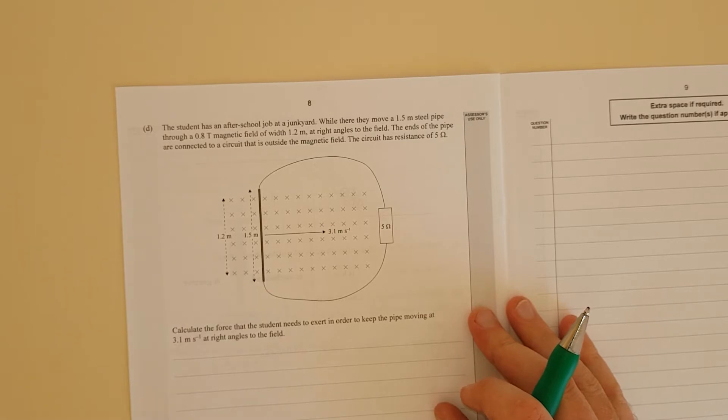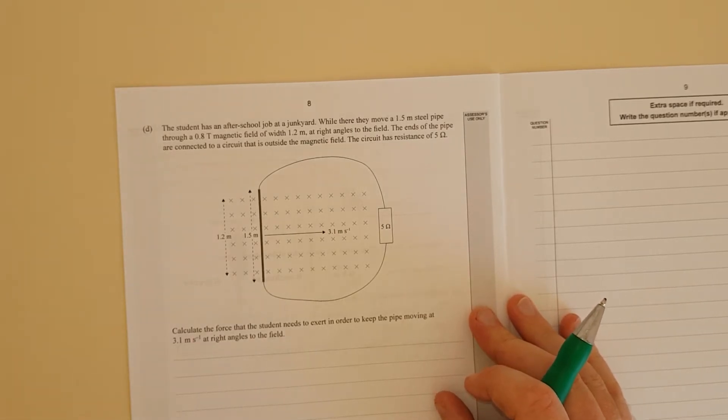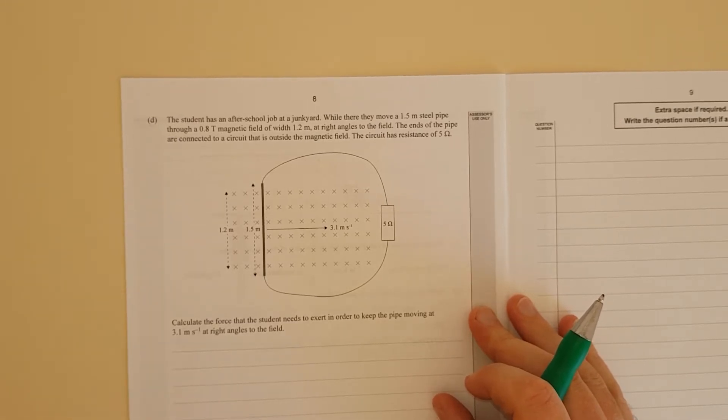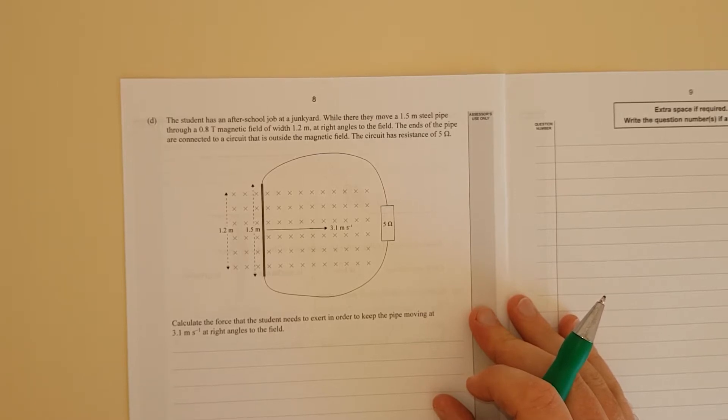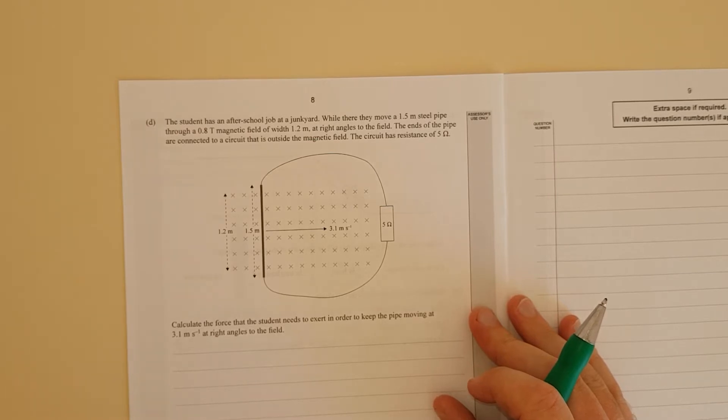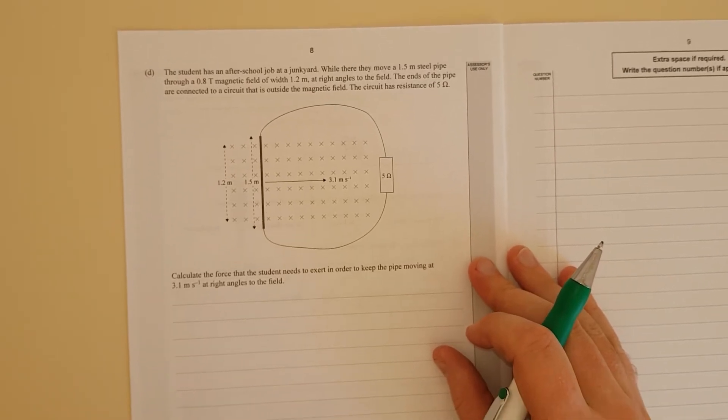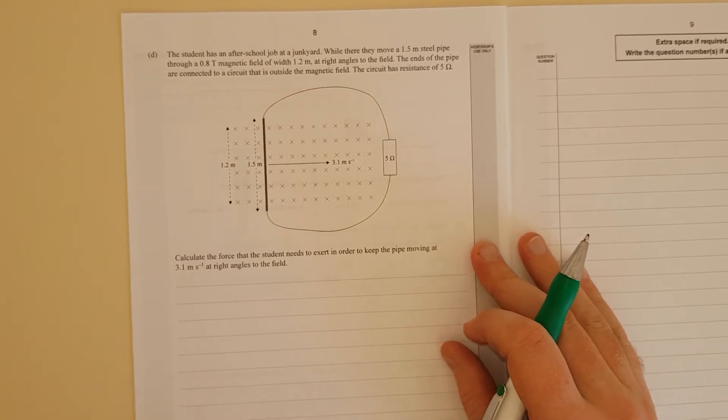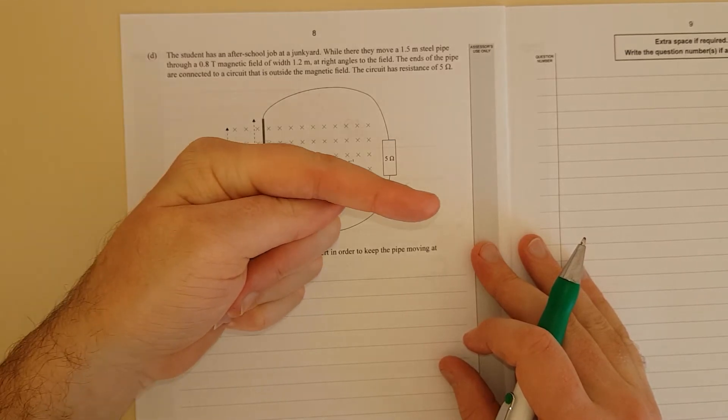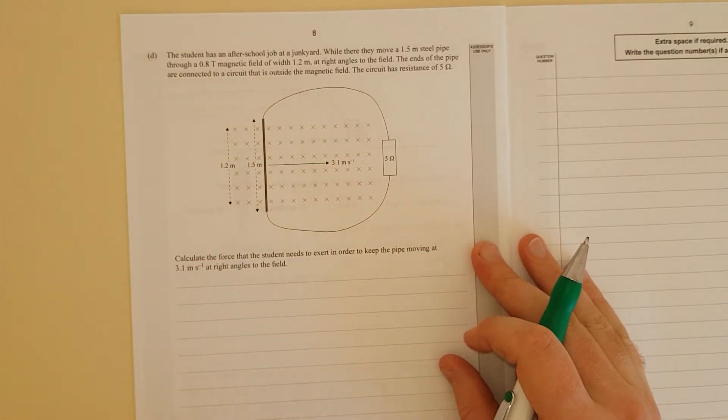Student has an after school job at a junkyard. While they are there, they move a 1.5 metre steel pipe through a point at Tesla magnetic field with 0.2 metre at right angles to the field. The ends of the pipe are connected to a circuit outside the magnetic field. The circuit's got a resistance of 5 ohms. Calculate the force that the student needs to exert in order to keep the pipe moving at 3.1 metres per second at right angles to the field. He's trying to move it, he's trying to push it.